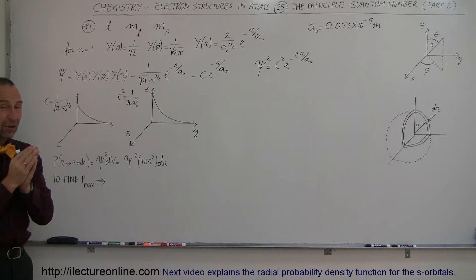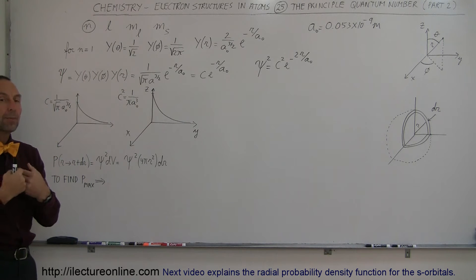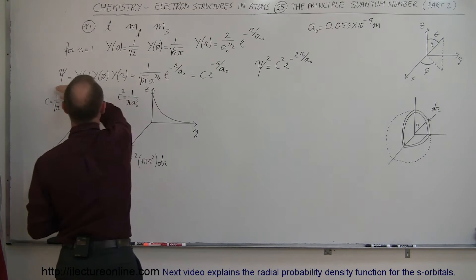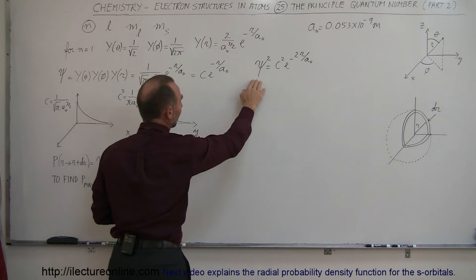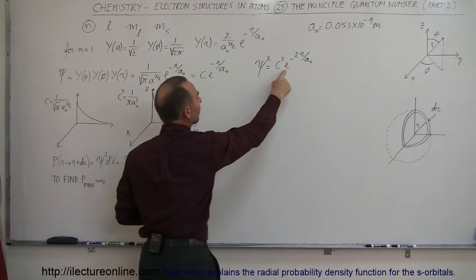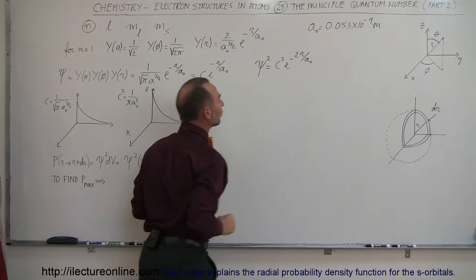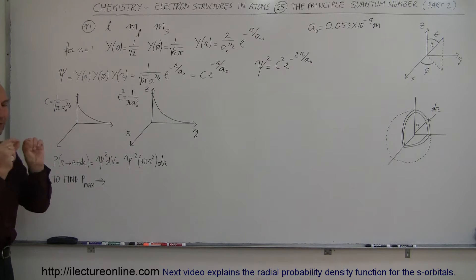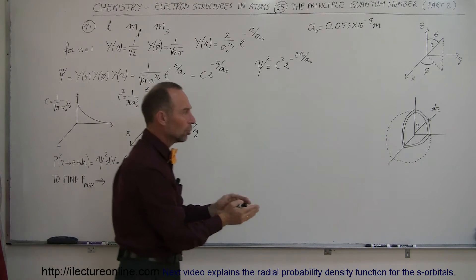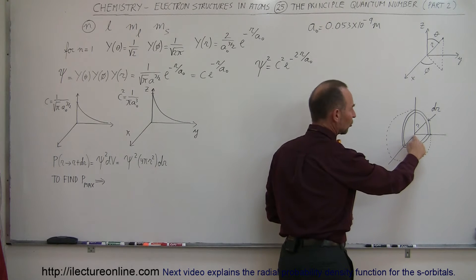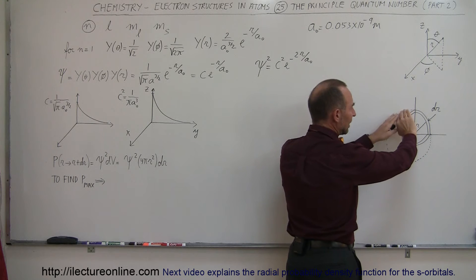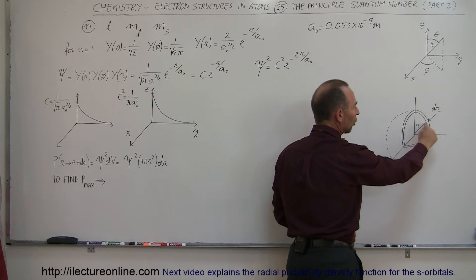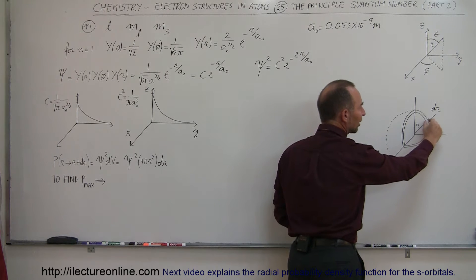In order to find where the electron will reside, we have to come up with the probability density function, which is simply the square of this wave equation. If we square this, we get the constant squared times e to the minus 2 times r over a sub-naught. If we want to calculate the probability of finding the electron in a certain region around the nucleus, we want to find the electron in the shell region a distance r away from the nucleus, in a shell of thickness dr — a very thin shell.